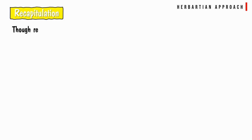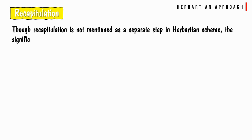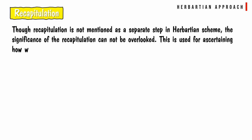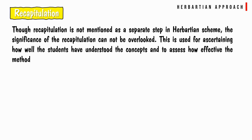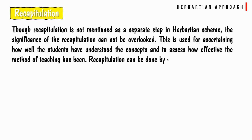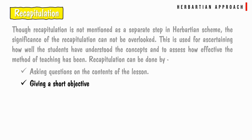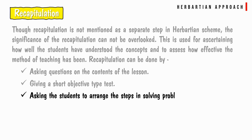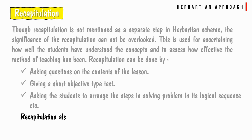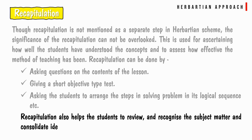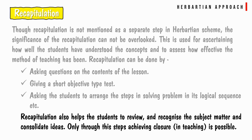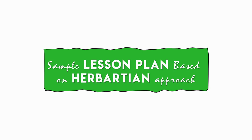Recapitulation: Though recapitulation is not mentioned as a separate step in the Herbertian scheme, its significance cannot be overlooked. It is used for ascertaining how well students have understood the concept and assessing how effective the method of teaching has been. Recapitulation can be done by asking questions on the lesson content, giving a short objective-type test, or asking students to arrange problem-solving steps in logical sequence. It helps students review, recognize, and consolidate ideas, and achieving closure in teaching is possible only through these steps.